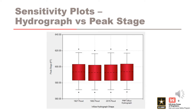The final sensitivity plot shows the effect of hydrograph shape by showing the variation in peak stage for each hydrograph shape in the format of a box and whisker plot. This plot shows a seven-number summary for the variation in peak stage for each hydrograph shape, and can be used to evaluate the sensitivity of the peak stage to the different hydrograph shapes.